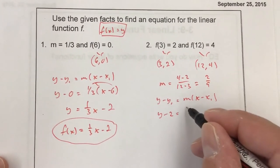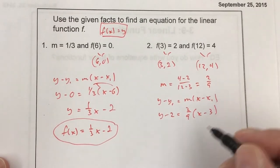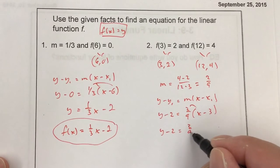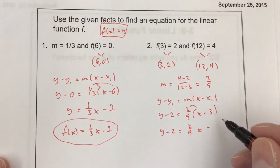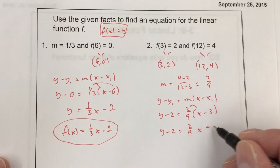I'm going to pick the (3, 2). So y minus 2 equals my slope, which is 2/9 times x minus 3. We distribute. I get (2/9)x.